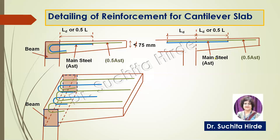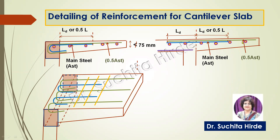So main reinforcement is AST, then 50% bars are curtailed, and therefore at the free end the reinforcement is 50% of AST. In addition to this, there are distribution bars in the perpendicular direction. In section, these appear as dots representing distribution steel, as shown in both the 3D diagram and the cross-section. So this completes the detailing of reinforcement for cantilever slab.